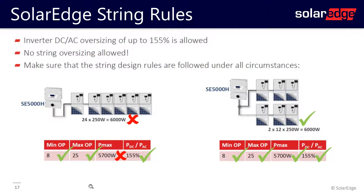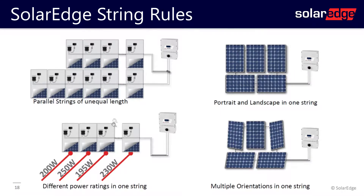We get a lot of questions about oversizing. It is always okay to oversize the inverter — in fact, with a single-phase inverter with HD Wave technology, our maximum DC-to-AC ratio is 155 percent. However, you are never allowed to oversize a string. For example, if the maximum string length is 5,700 watts and you have 24 modules at 250 watts yielding 6,000 watts, you will have to break it up into two strings of 12, since 6,000 watts exceeds the maximum of 5,700.